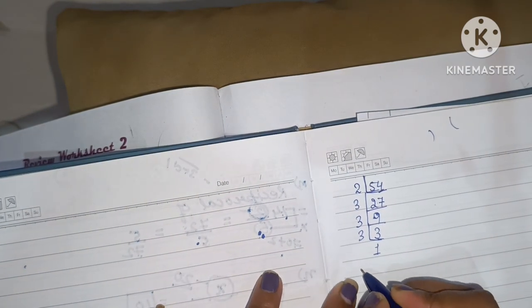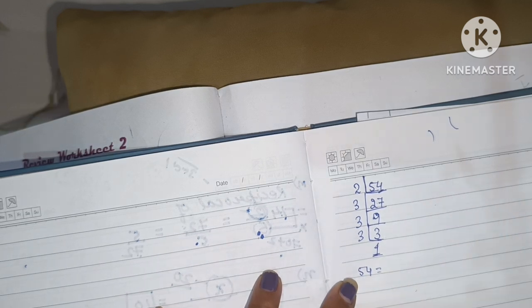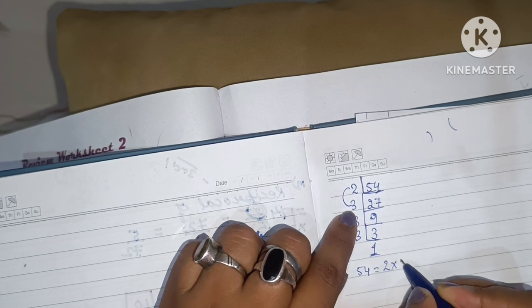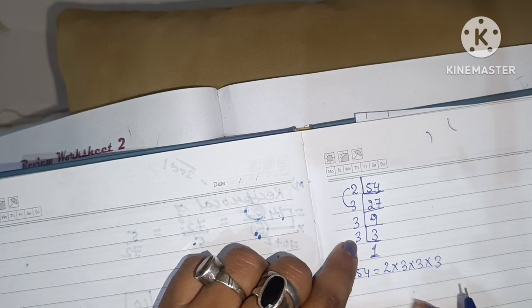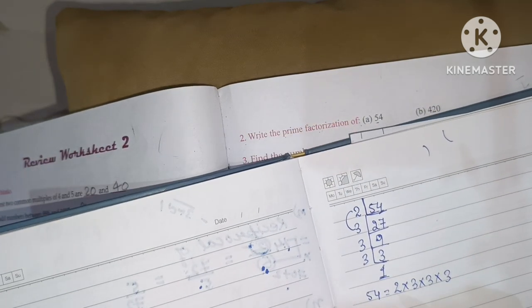Now the answer will be 54 equals to, now 1 has come, so we'll leave that. 54 is equals to 2 into 3 into 3 into 3. You don't need to write 1. So, this one is the answer.